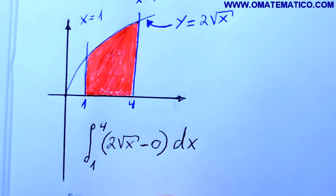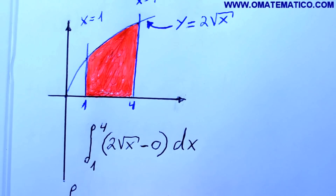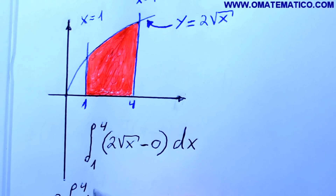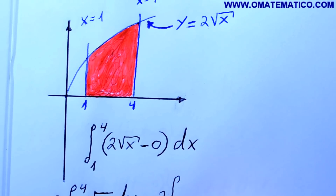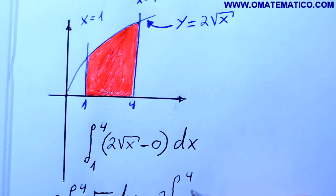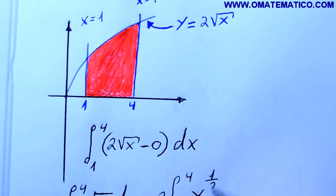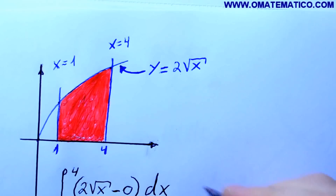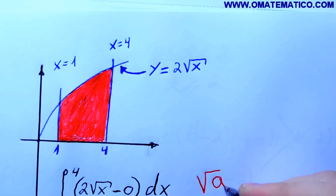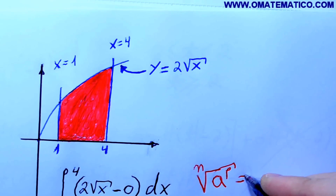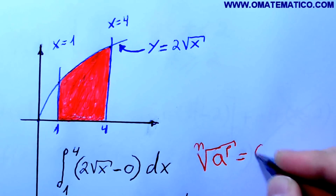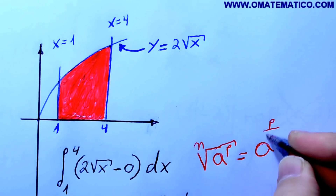Este 2 pode vir para fora, vai ficar integral de 1 a 4, 2 vezes raiz de x dx. Aqui, raiz de x vai dar 2 integral de 1 a 4, x na 1,5 dx. Lembrando daquela propriedade: raiz de a elevado a p com índice n é a mesma coisa que a elevado a p sobre n — foi o que eu usei aqui.